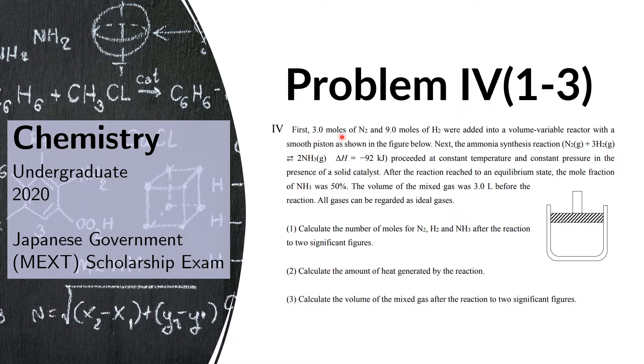First, 3.0 moles of nitrogen and 9.0 moles of hydrogen were added into a volume variable reactor with a smooth piston as shown in the figure below. Next, the ammonia synthesis reaction, this reaction here with an enthalpy of negative 92 kJ per mole, proceeded at constant temperature and constant pressure in the presence of a solid catalyst.